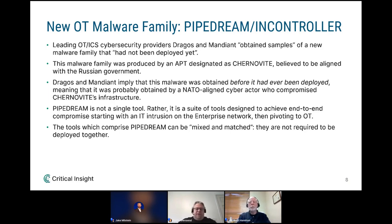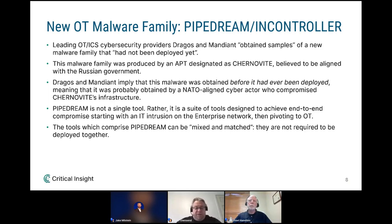It looks like the malware was obtained before it had ever been deployed — it might have been pulled not from the industrial network in which it was intended to be deployed, but from the infrastructure belonging to the actual attacker. In effect, the federal government or some NATO-aligned cyber actor may have compromised Russian government systems, found this very nasty malware, and shared it with private industry partners for analysis. Dragos and Mandiant both put out their own reports, which are really good and detailed — I highly recommend reading those for more information on the capabilities of each component.